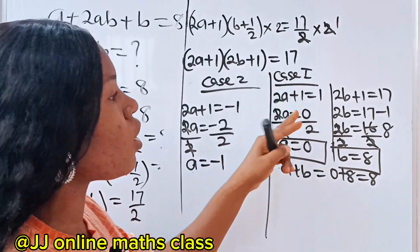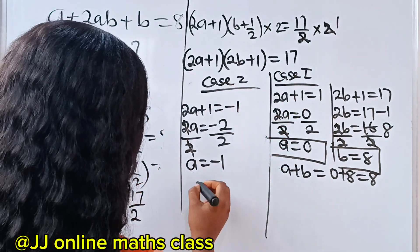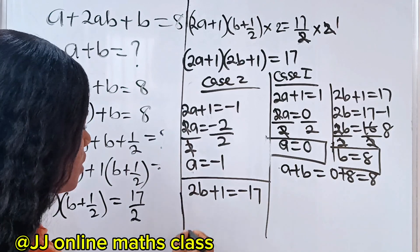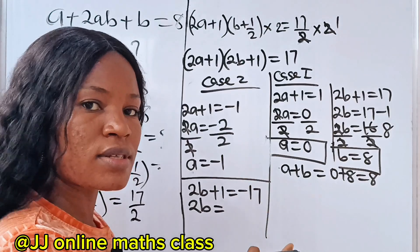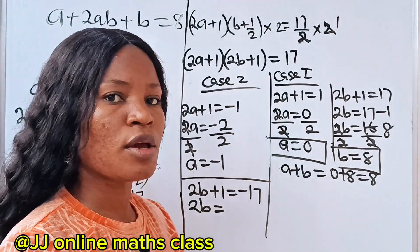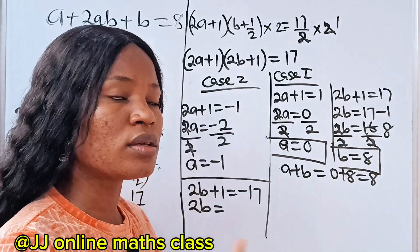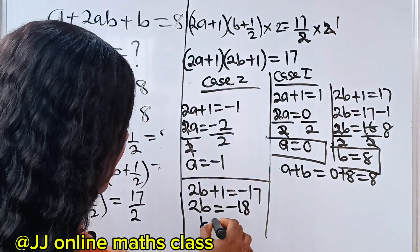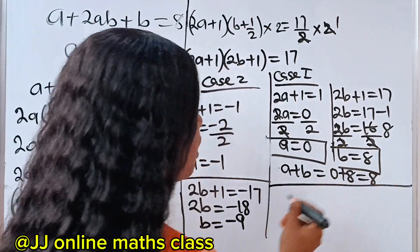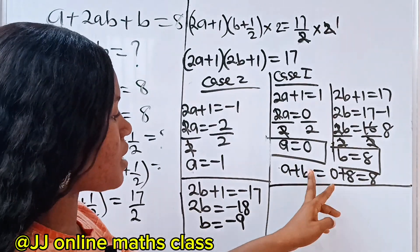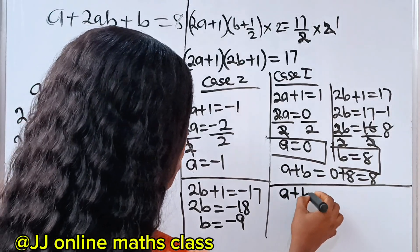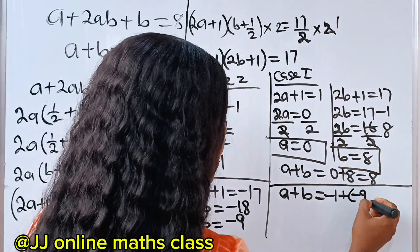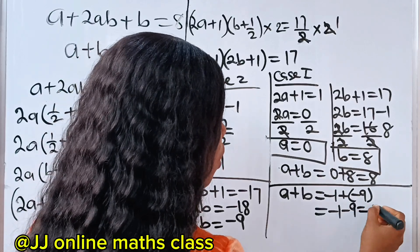For the second part of Case 2: 2b + 1 = −17. Solving, 2b = −17 − 1 = −18, so b = −9. Therefore the second value of a + b equals −1 + (−9) = −1 − 9, which equals −10.